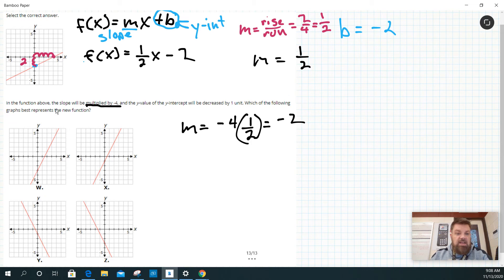And then it says the y-intercept will be decreased by one. So my y-intercept is negative two. So my graph down here would be negative two decreased by one, which is actually negative three.